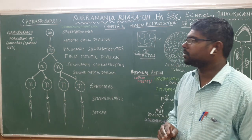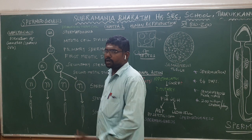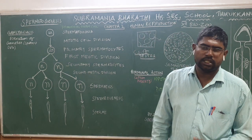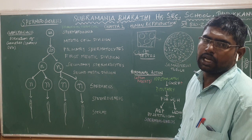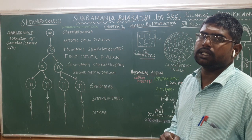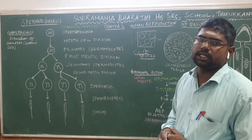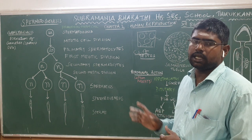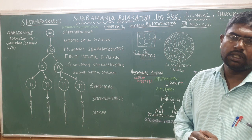Gametogenesis is of two types: spermatogenesis and oogenesis. The suffix '-genesis' means formation. So spermatogenesis refers to sperm formation, and oogenesis refers to egg formation. We will talk about spermatogenesis — where does sperm production take place?